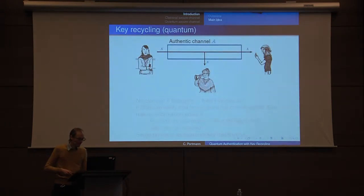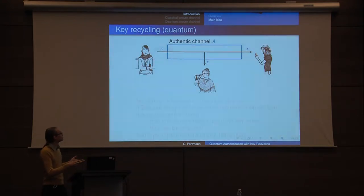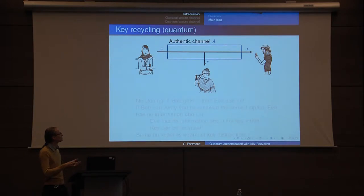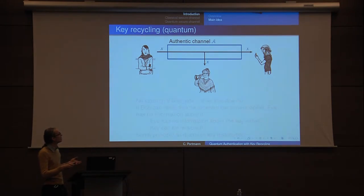If you look at an authentic channel, what we're trying to build is basically this: Alice sends a message which goes to Bob, but Eve also gets a copy. What's important is that Eve cannot influence the message — she can passively read it, but she cannot change it or insert something into the channel.